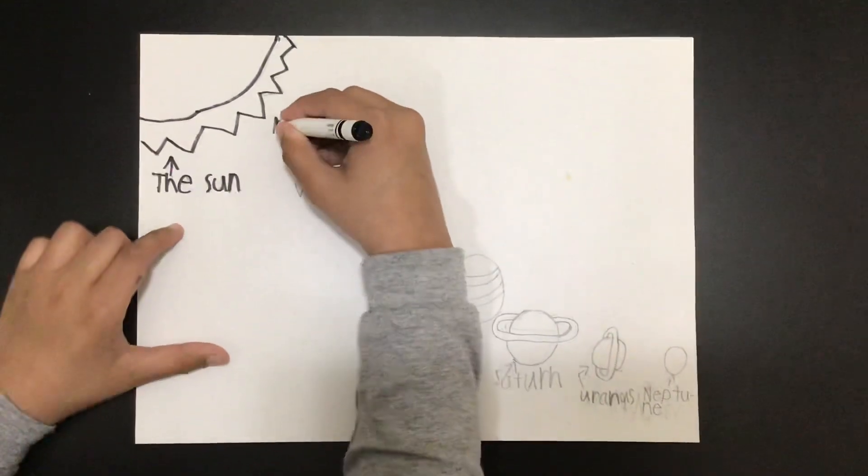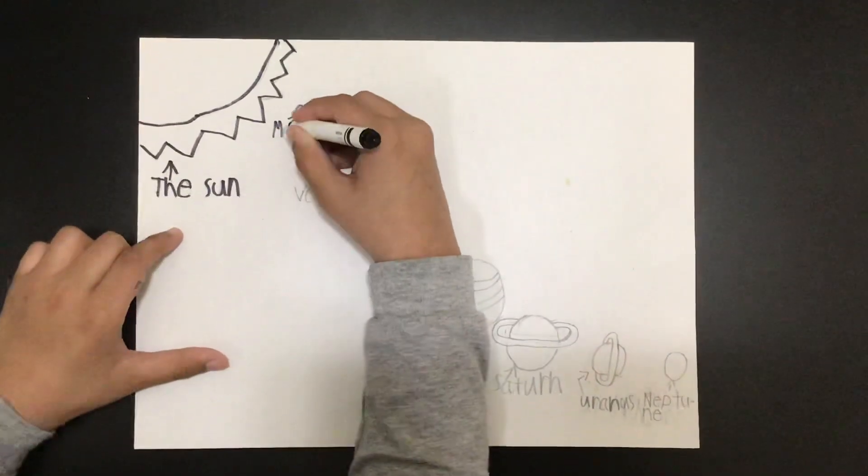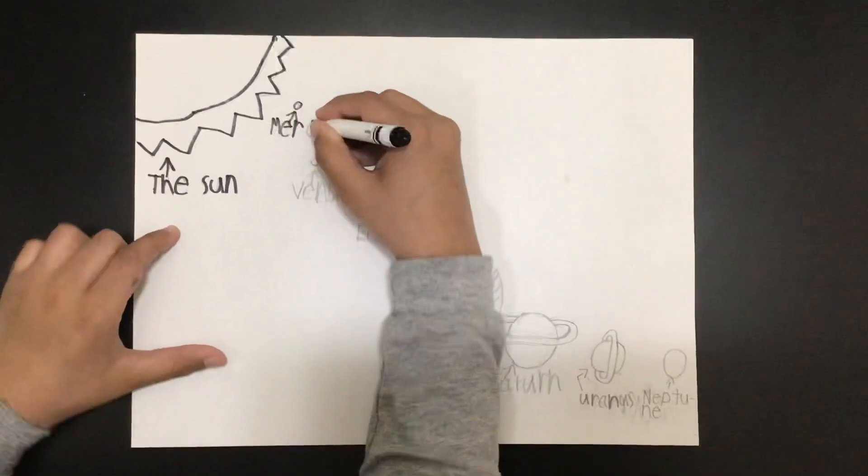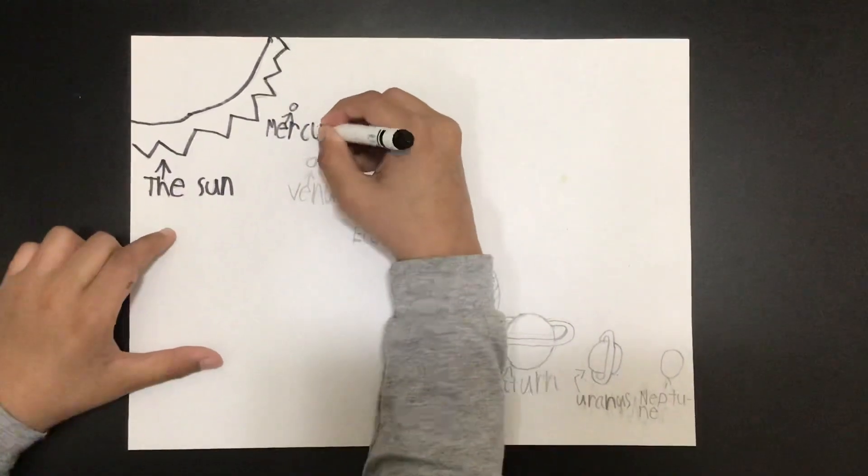This is the first planet, Mercury. You might be thinking it is the hottest because it is the closest to the sun, but it is not.